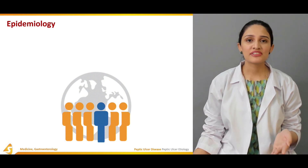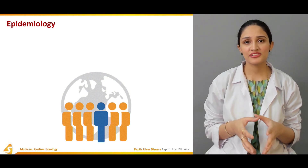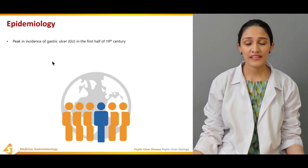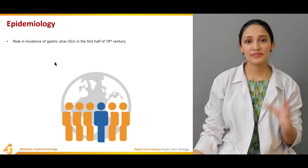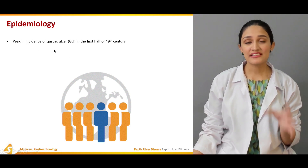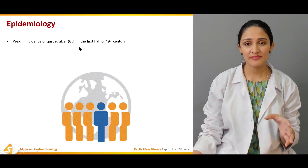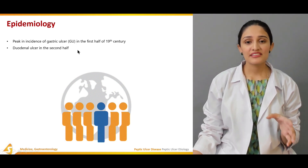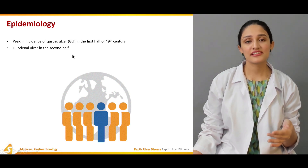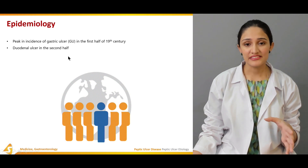If we talk about the epidemiology, there have been remarkable changes in the epidemiology of peptic ulcers in the past two centuries. Specifically, gastric ulcers had a peak incidence in the first half of the 19th century, and then in the second half of the 19th century, duodenal ulcers arose and had the most peaked incidence.